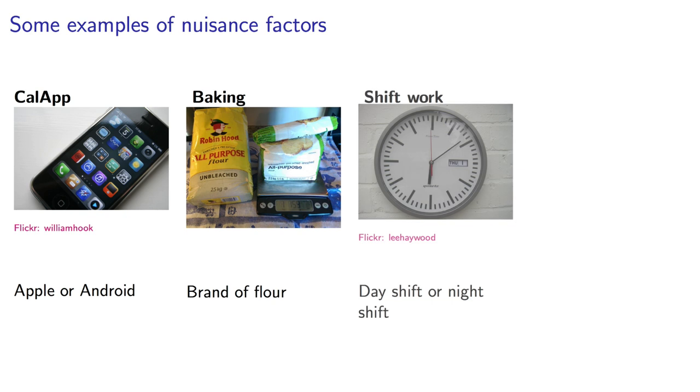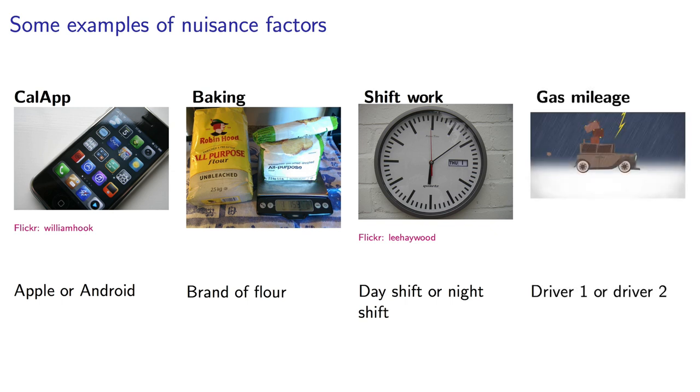Another case might be experiments in a factory. Half the experiments are done during the day shift, and the other half is done during the night shift. Or if you're testing gas mileage in a car, you might have one driver and another driver.